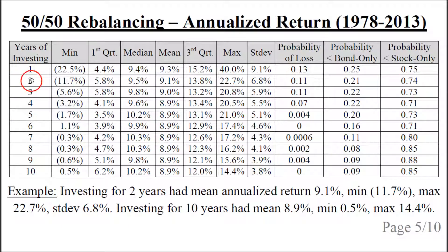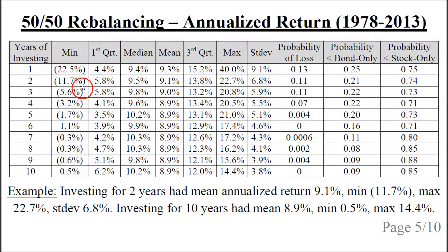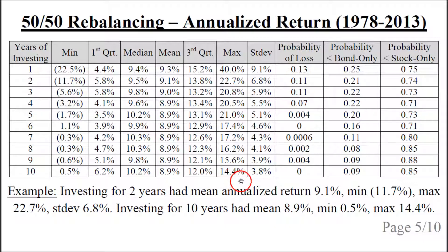For example, if we invest for two years and consider all two-year investment periods from 1978 to 2013, using the 50-50 rebalancing scheme, the lowest annualized return would be a loss of 11.7%, the greatest would be 22.7%, and the average would be 9.1%. For 10 years of investing with 50-50 rebalancing, the minimum annualized return would be 0.5%, the maximum 14.4%, and the mean 8.9%. This is historical data for the period 1978 to 2013.